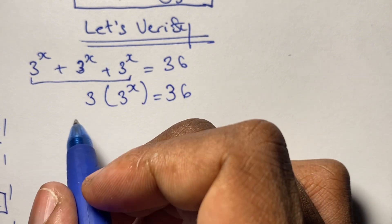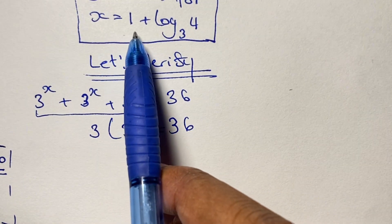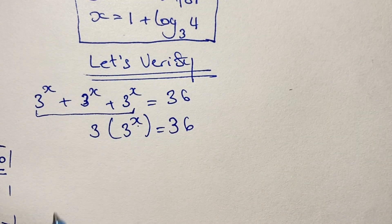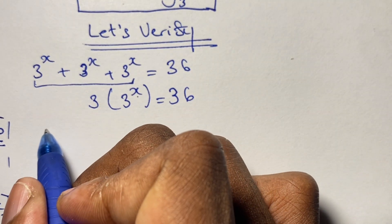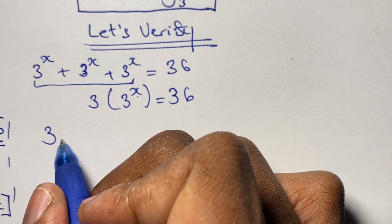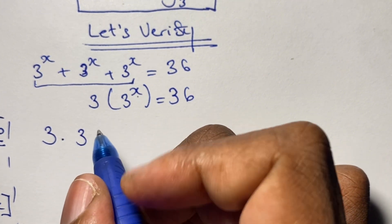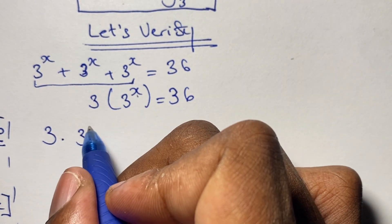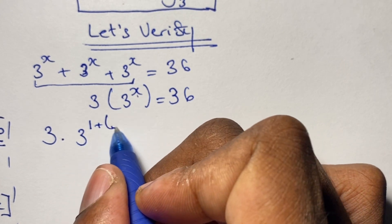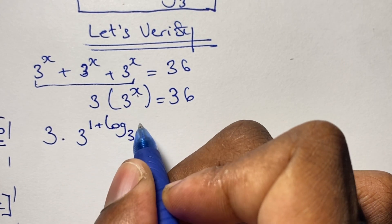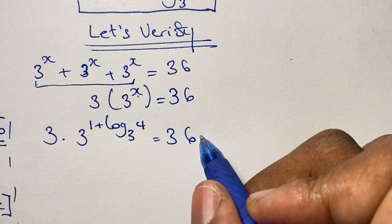Now, since we have the value for x, we can rewrite our equation using this value of x. We write it as 3 times 3 to the power of x, where the value of x is 1 plus log base 3 of 4, and this all equals 36.